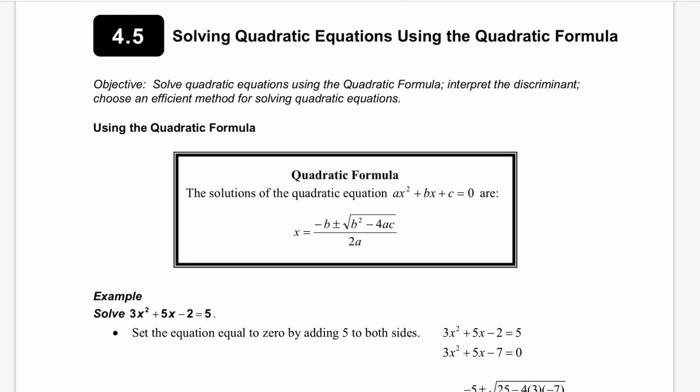The solutions of a quadratic equation ax² + bx + c = 0 are x equals negative b plus or minus the square root of b squared minus 4ac, all over 2a. There are easier methods in some circumstances — factoring is easier if it factors easily. You want to look to see if it will factor easily first, but today we're only focusing on using the quadratic formula. It has to be set equal to 0 to use the quadratic formula.